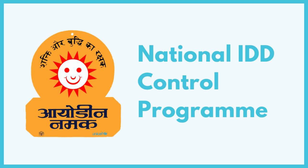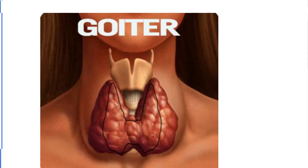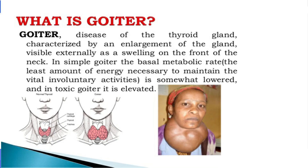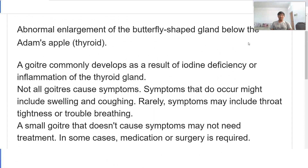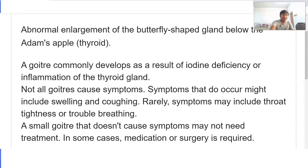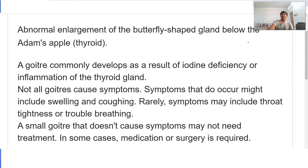Good afternoon everyone. In today's class I would like to discuss the National Iodine Deficiency Disorder Control Program. The first topic is goiter — the abnormal enlargement of the butterfly-shaped thyroid gland below the Adam's apple. A goiter commonly develops as a result of iodine deficiency or inflammation of the thyroid gland.